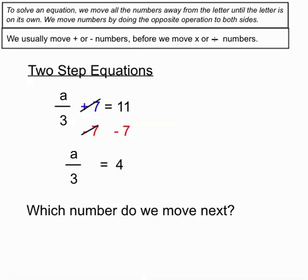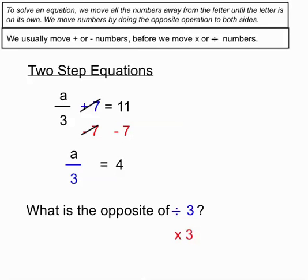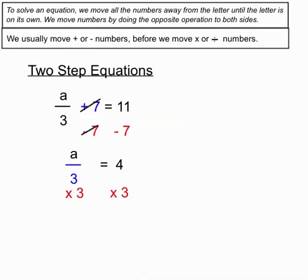Which number do we need to move next? We want the letter on its own, so we'll have to move that 3 that's on the bottom of the fraction. That 3 is dividing by 3. The bottom of any fraction is considered to be dividing into the top. What's the opposite of a divide by 3? It's a multiply by 3. We're going to multiply by 3 both sides. On the left-hand side, a divide by 3 and a multiply by 3 will cancel each other out, leaving us with the letter on its own. On the right-hand side, 4 times 3 equals 12.